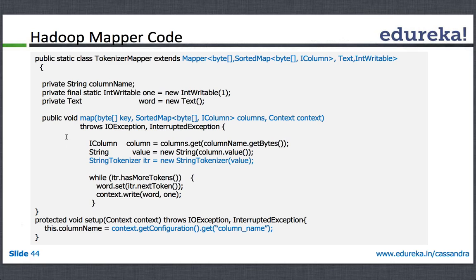Then you write your map method — overriding the map method for the mapper. It takes the byte array key, the value, and the context information, along with IOException and InterruptedException. This code is all written in Java, so people familiar with Java will find it easy. All the column information is going to be provided by your input format. You just invoke columns.get — since it's a sorted map, you get it using the column name, and columnName.bytes gives you all the iColumn information.